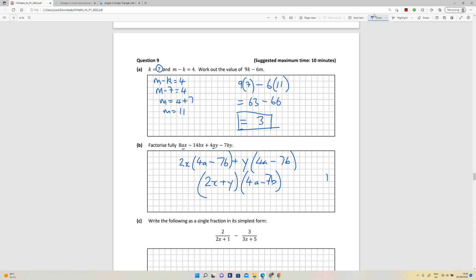Plus y outside of 4a minus 7b, which would give me 2x plus y times 4a minus 7b. The outside 2x by 7b is 14bx. Yeah, that's okay. Inside y by 4a is ay.